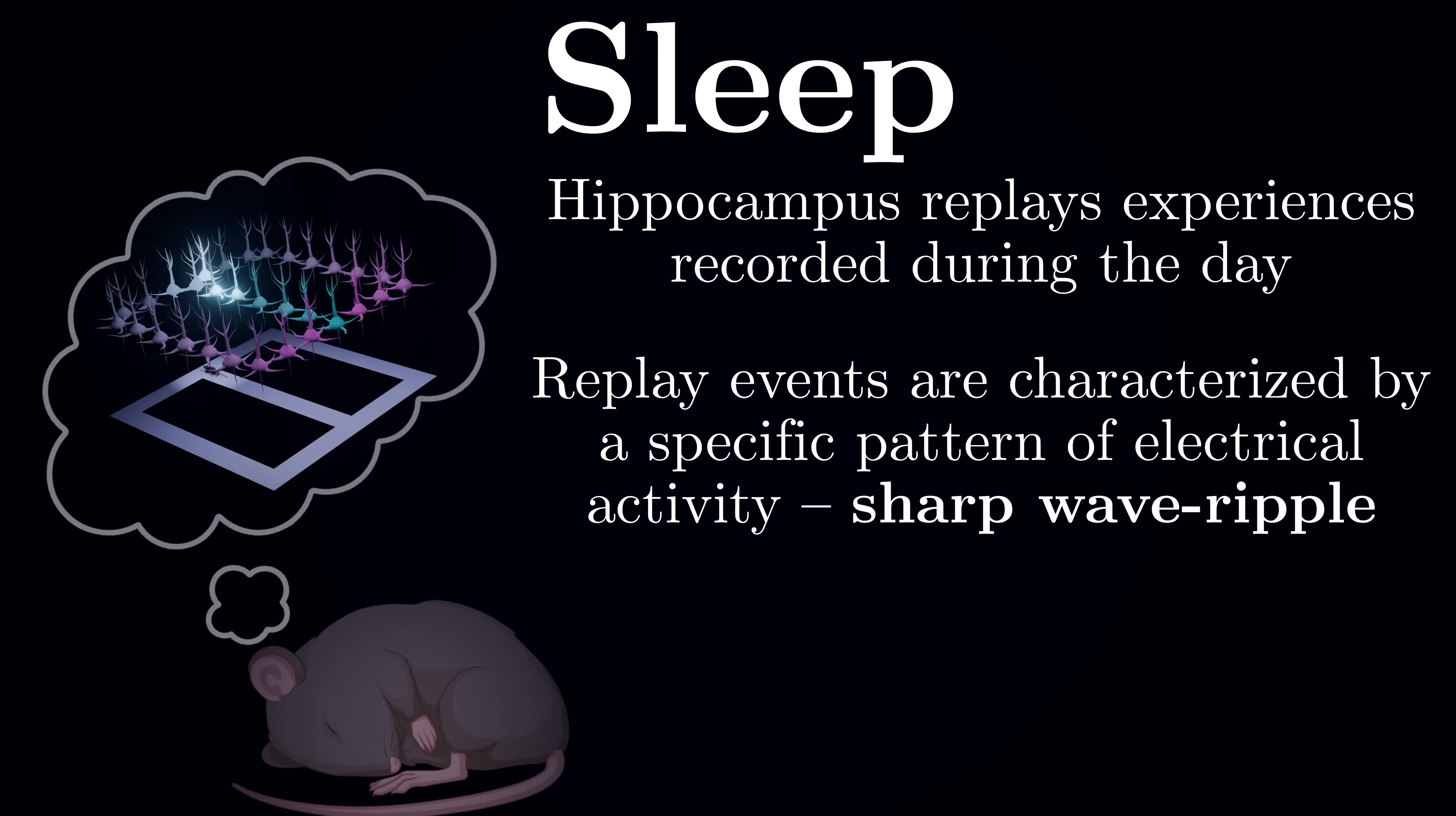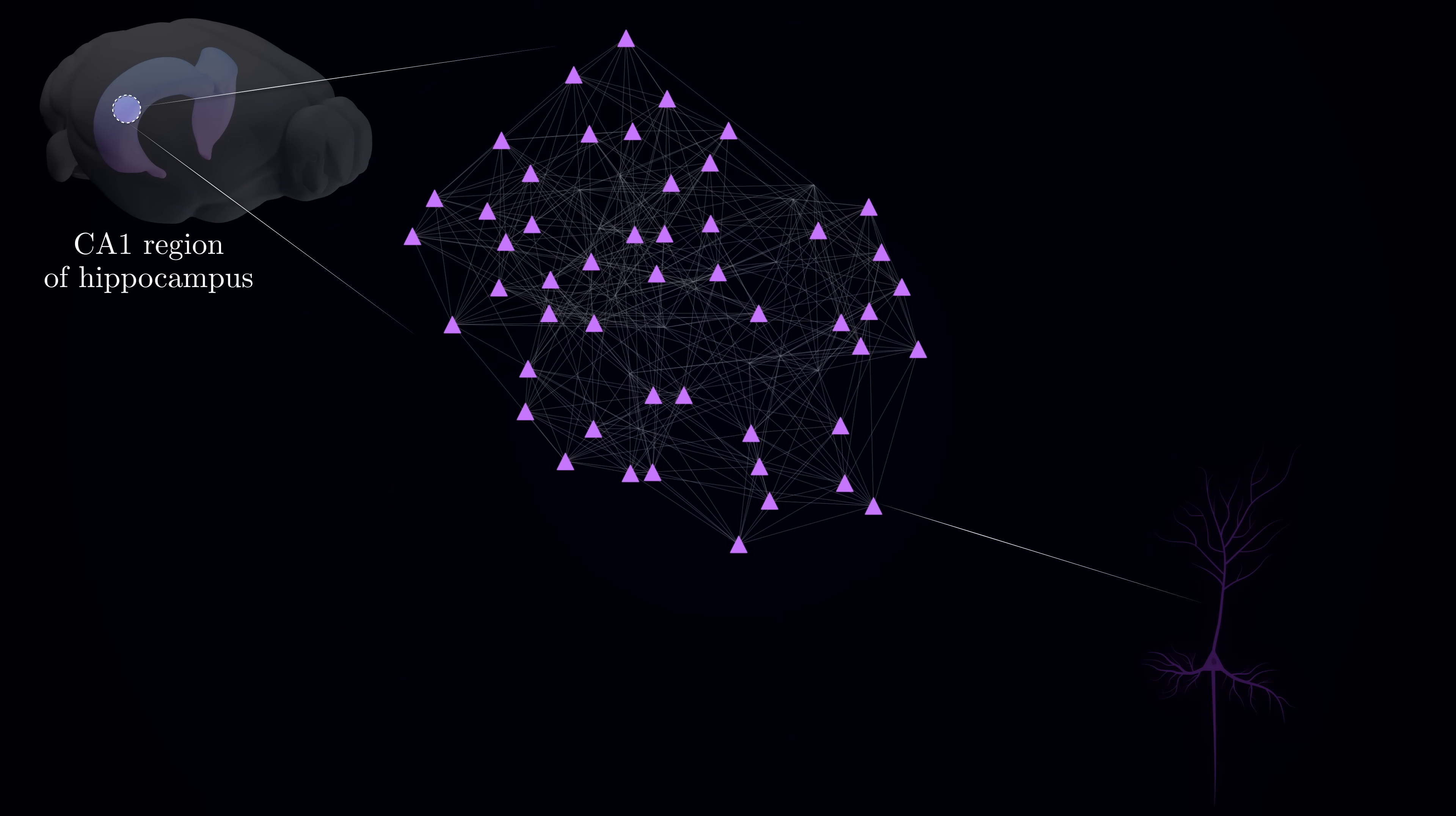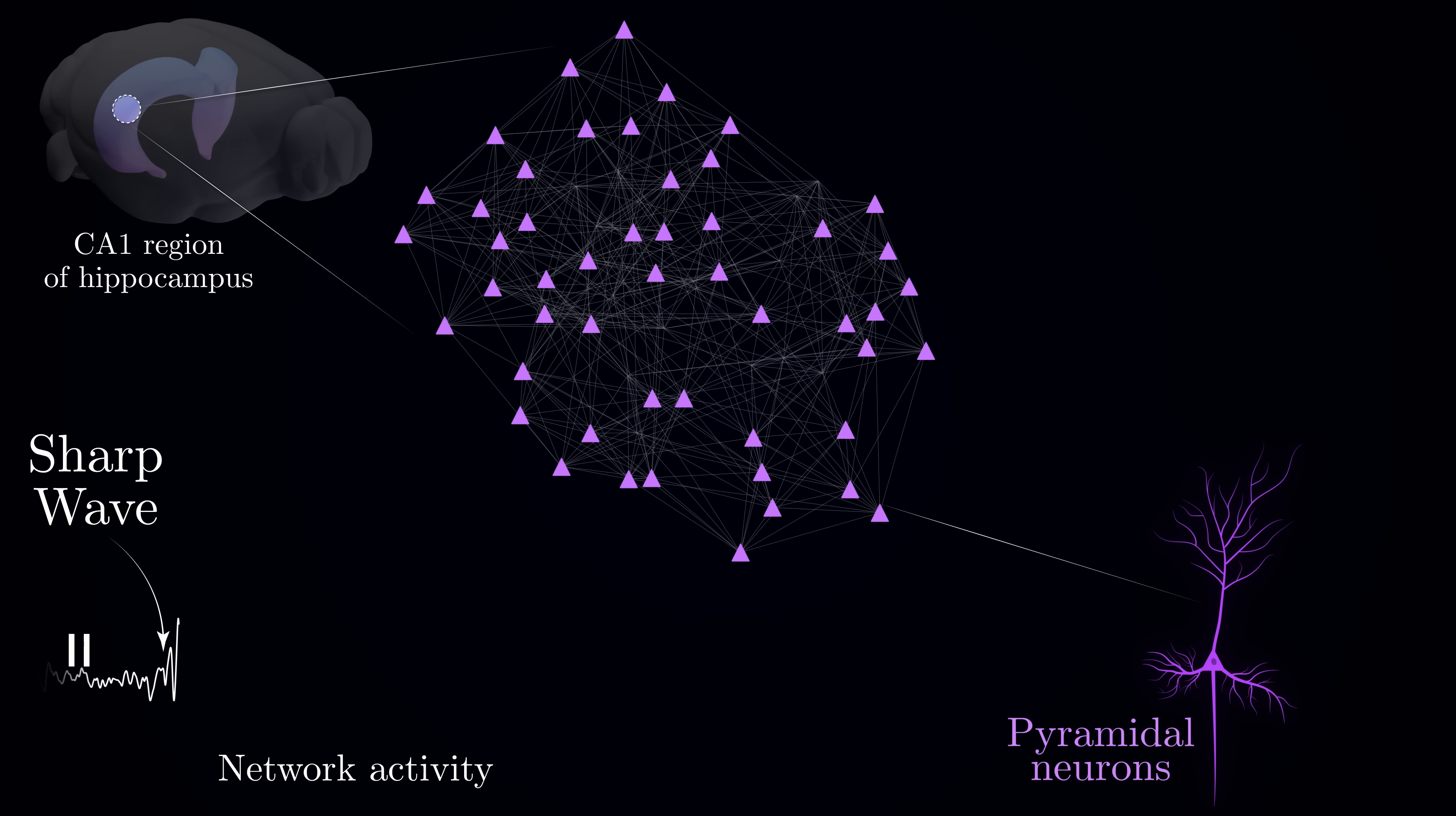This replay is accompanied by a distinctive pattern of brain activity called a sharp wave ripple. Here is a way to think about it. Imagine a region of the hippocampus that spent the day building and updating its cognitive map. During sleep, at the onset of the replay event, a massive wave of synchronized input arrives from upstream hippocampal area, triggering a so-called sharp wave. This wave sweeps through the neural network like a tide and awakens countless previously quiet neurons.